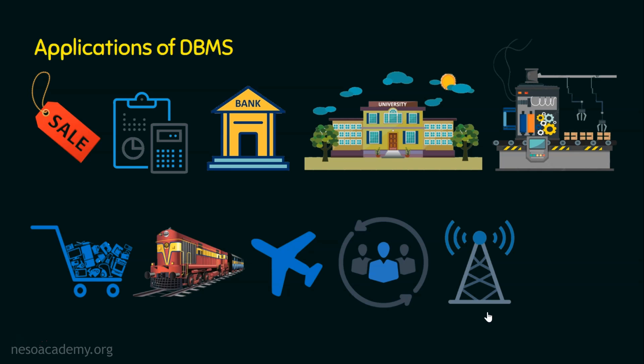Coming to the last application area, which is insurance. Insurance companies need to maintain user details, policy details, buyer details, nominee details, payment details, claim settled and login details. So we have seen a few application areas of database management systems.